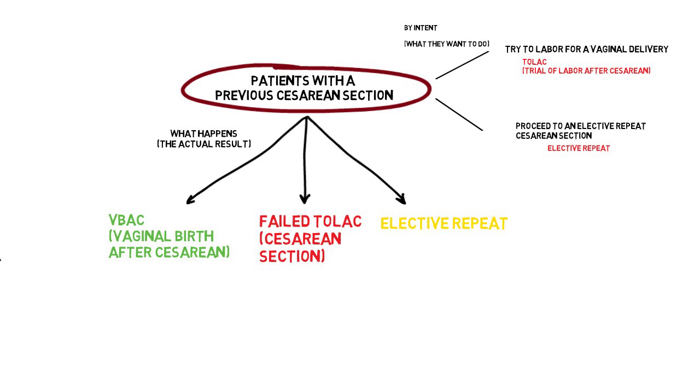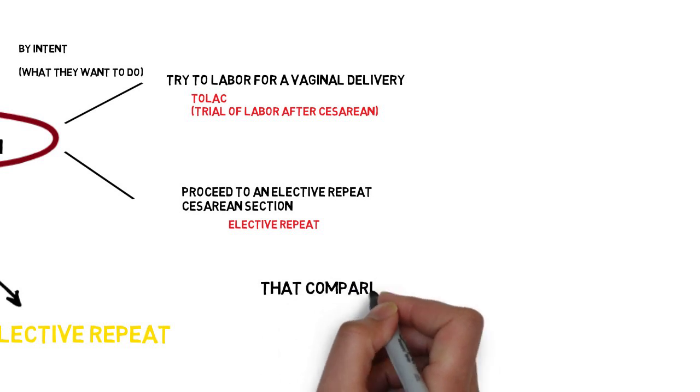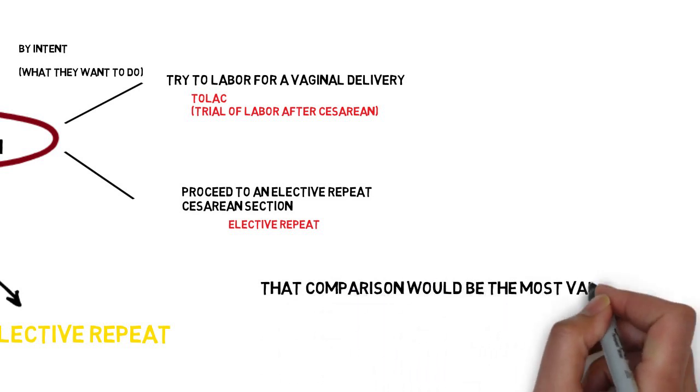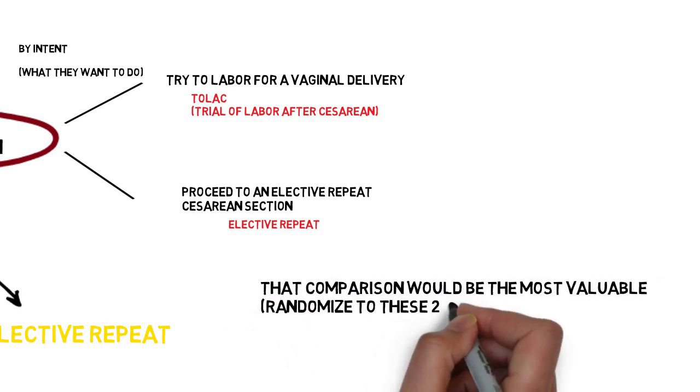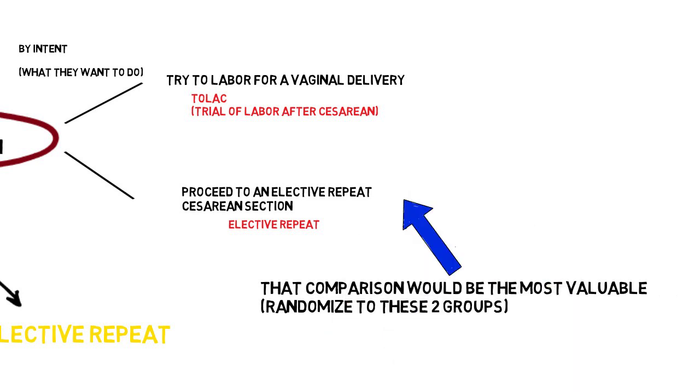The Bulletin points out correctly, I believe, quote, the appropriate clinical and statistical comparison is by intention to deliver TOLAC versus elective repeat, end quote. Not by result: VBAC, Failed TOLAC, or elective repeat.